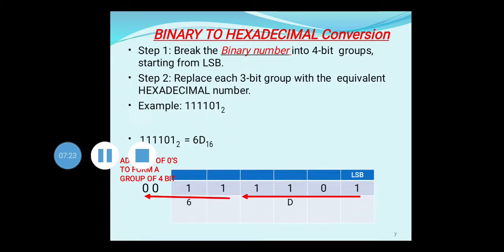We will start with the conversion. There are certain rules. Whatever binary number is given, you first check whether it has only an integer part or both an integer and fractional part. Step 1 is to break the binary number into groups of 4 bits starting from the LSB bit. In octal conversion we grouped 3 bits; here we group 4 bits. After grouping into 4 bits, replace each group with its equivalent hexadecimal number from the 4-bit binary table.